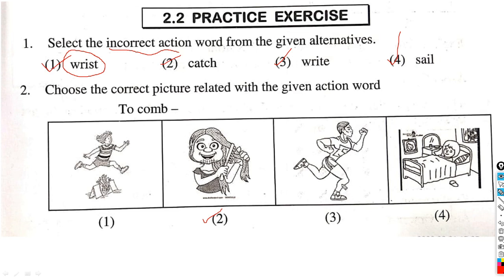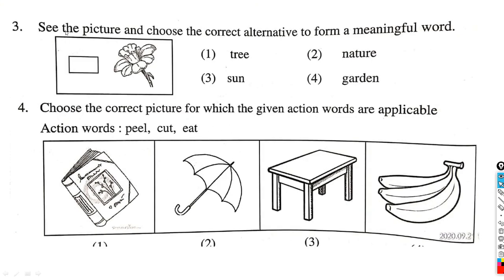Third is running and fourth is sleeping, so the correct one is the second option. Question number 3: See the picture and choose the correct alternative to form a meaningful word. In this picture, this is a flower. Tree flower? No, it's wrong. Nature flower? No, it's also wrong. Garden flower? No, it's also wrong. Why is it wrong? Because it has no sense or no meaningful word. Third one is sun - sunflower. Sunflower is a flower, so this is the correct one, option number 3.